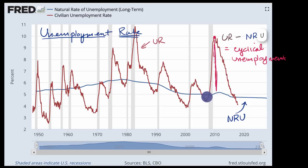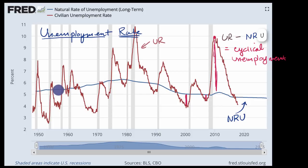But when the economy's really humming, you can even have negative cyclical unemployment, where the true unemployment rate is lower than the natural rate of unemployment. Maybe businesses just have to hire people that aren't fully qualified for the jobs, just because things are so hot at that moment in time. We can break down things even further — we can break down the natural rate of unemployment into two components: structural and frictional unemployment.